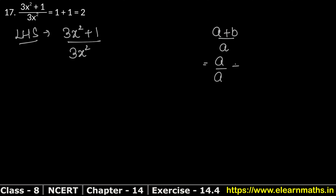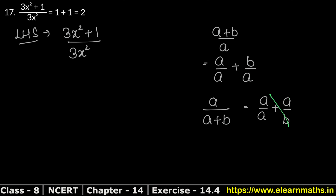When we have a plus b upon a, we can split it as a upon a plus b upon a. But if we have a upon a plus b form, we can't write it as a upon a plus a upon b. Let's keep this concept in mind. So for question 17, we can write: 3x squared upon 3x squared plus 1 upon 3x squared.